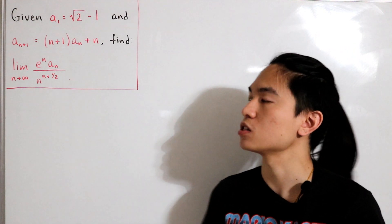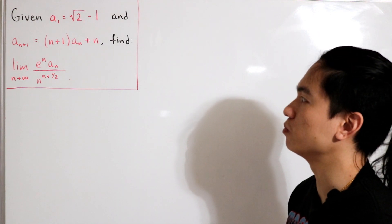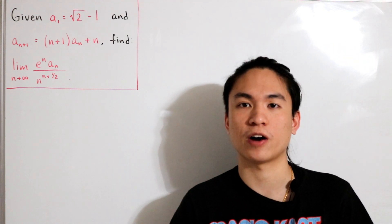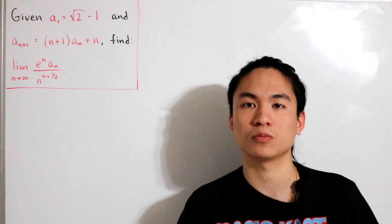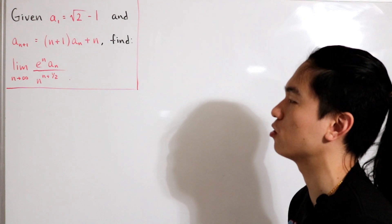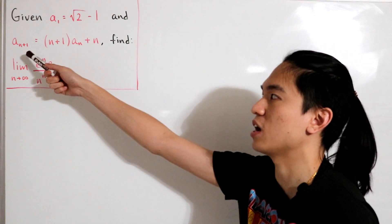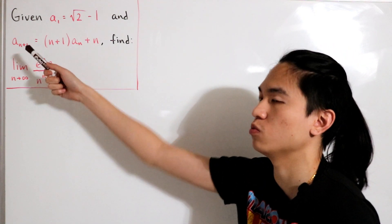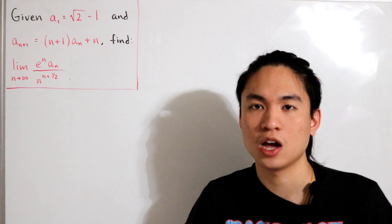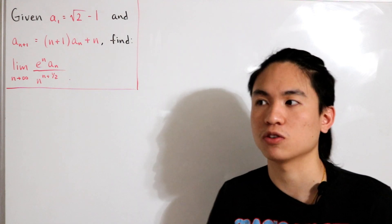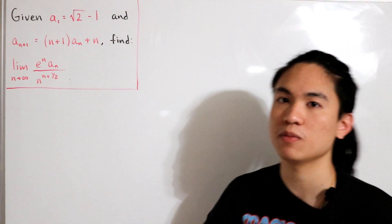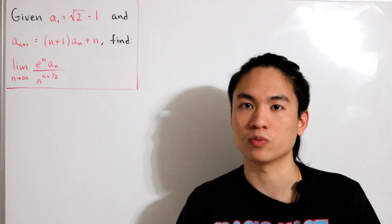The way we start off this problem is we want to find a generalization pattern, specifically when looking at a sub n+1 — really we're looking at a sub n in this sense. Once we find that generalization, we can plug it back into our limit and use the algebra.